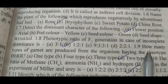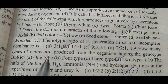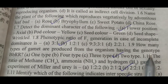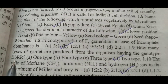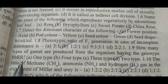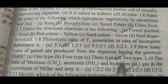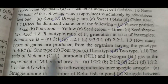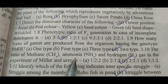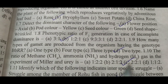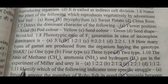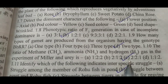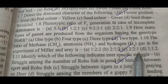1.9: How many types of gamete are produced from the organism having the genotype capital B, small b, capital R, capital R? Right answer will be D — two types. 1.10: The ratio of methane CH4, ammonia and hydrogen gas in the experiment of Miller and Urey is? Right answer will be C — 2 is to 2 is to 1.